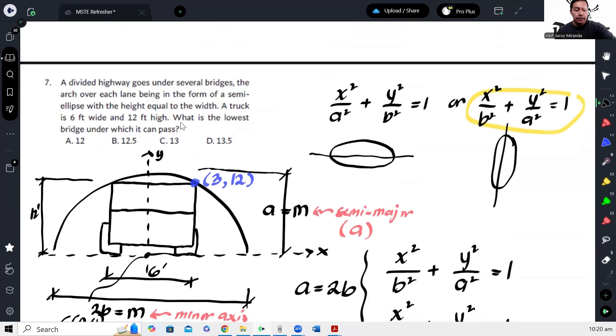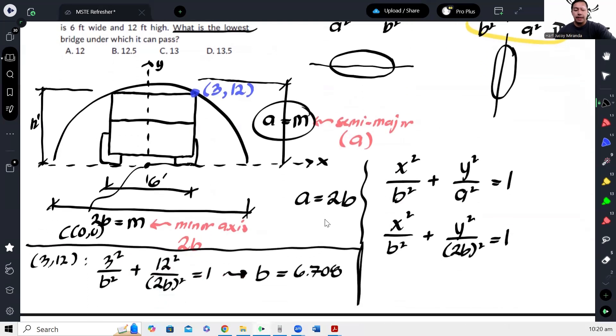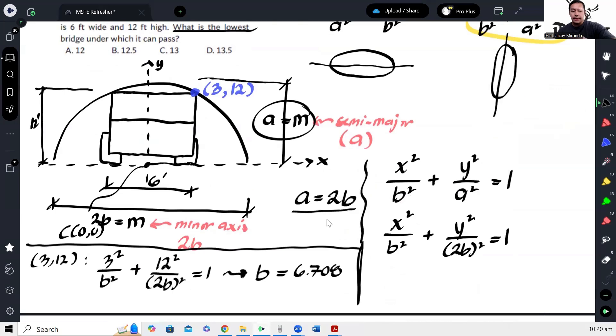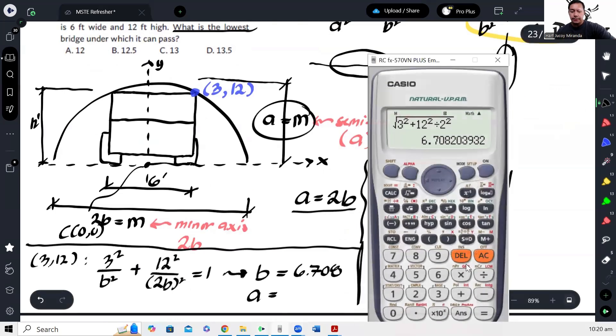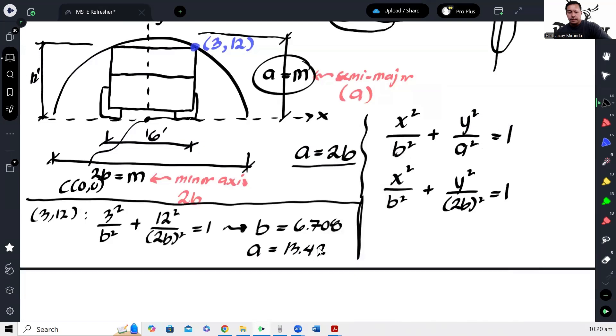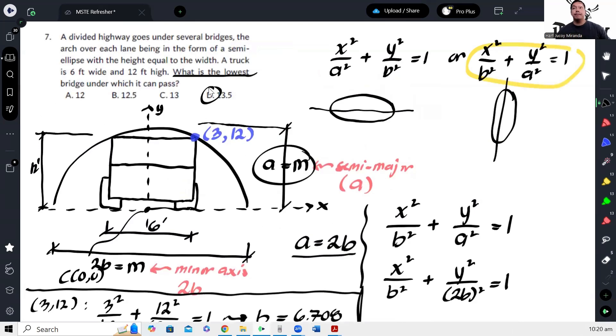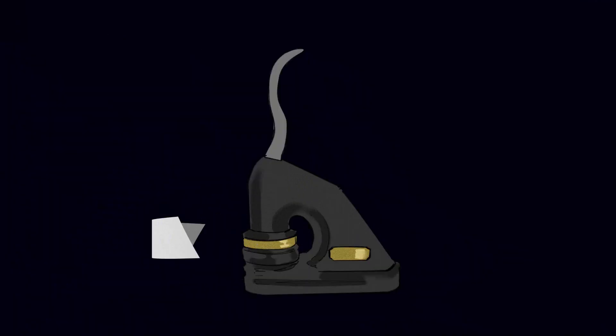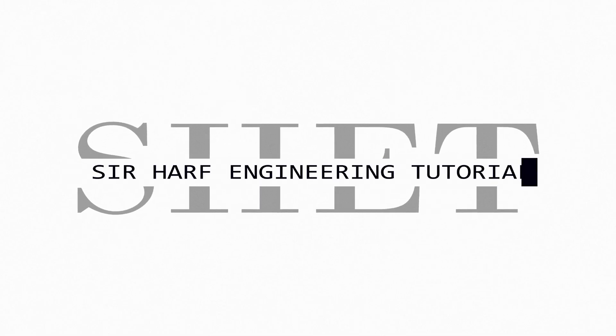But what they're asking us is what is the lowest bridge height. They're asking for this height, the lowest height. So since A is equal to 2B, A is equal to twice this answer, so it should be 13.42. Okay, or in the choices we can apply 13.5 to make sure the vehicle can pass. Okay, 1, 2.